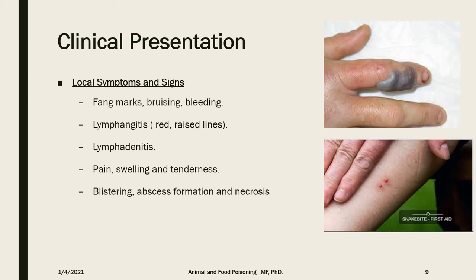Local symptoms and signs are related to the site where the snake bites the body. We can sometimes see fang marks, bruising, or bleeding. There may also be lymphangitis — raised red lines tracking up the bitten limb — as well as lymphadenitis and lymph node enlargement. Signs of inflammation include pain, swelling, tenderness, and redness. In some cases it progresses rapidly, leading to infection, abscess formation, necrosis, and gangrene.